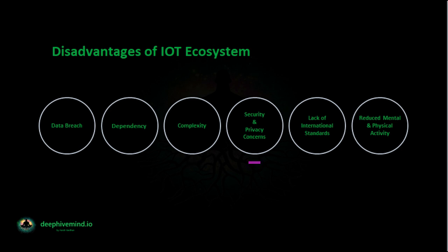Security and Privacy Concerns: IoT systems are connected to many devices and communicate within a network, meaning there is little to no privacy between devices. Lack of International Standards: There are no set international IoT standards to match compatibility, leading to problems in communication between manufacturers of different domains. Reduced Mental and Physical Activity: Overuse of the Internet and IoT makes people lazy and lethargic. Since IoT makes life easier, it leads to less physical movement, health issues, and increased stress levels.